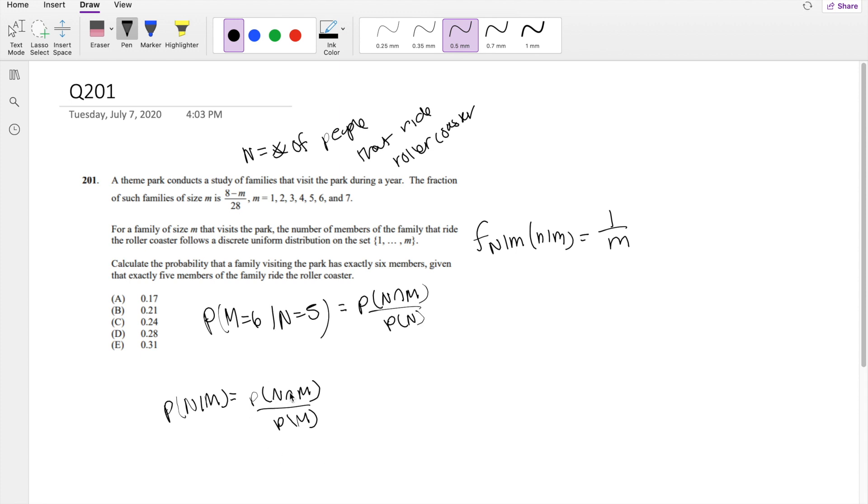So if we solve this for the probability of the intersection, the intersection is going to be equal to the probability of m times the probability of n given m. So we can just plug that in and that's basically what Bayes theorem is. It just decomposes it so probability of m times probability of n given m.